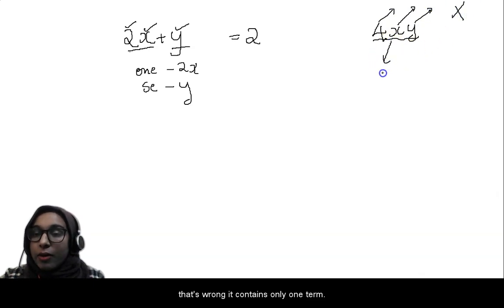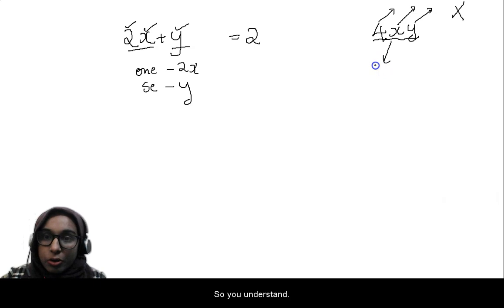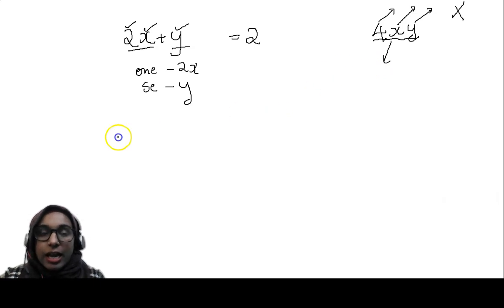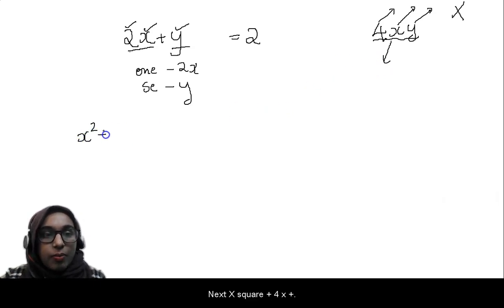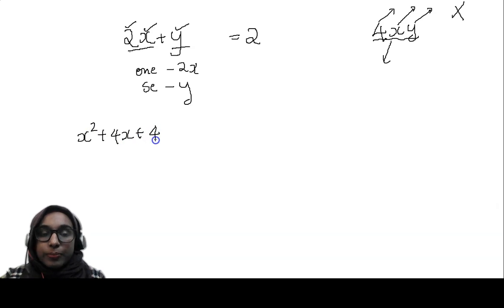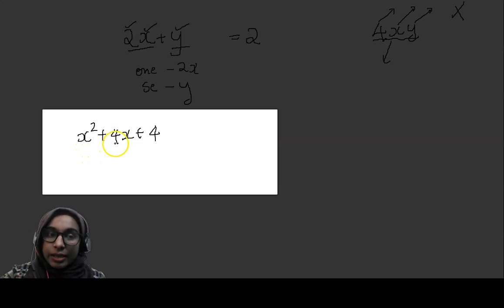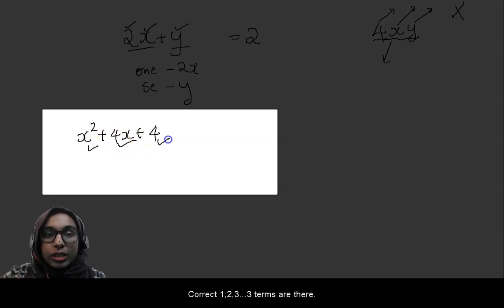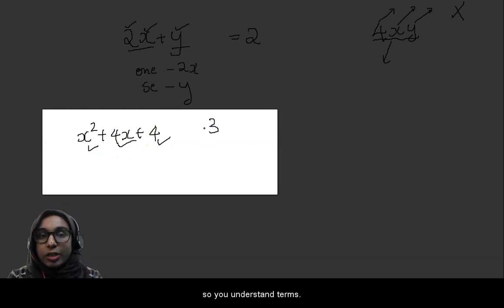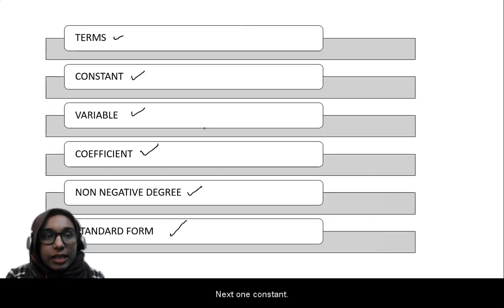Next: x squared plus 4x plus 4. In this polynomial, how many terms are there? Three terms are there. So you understood terms.